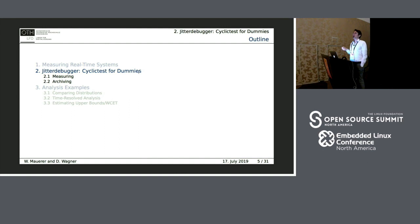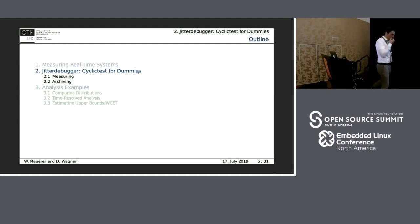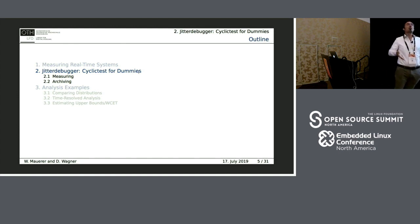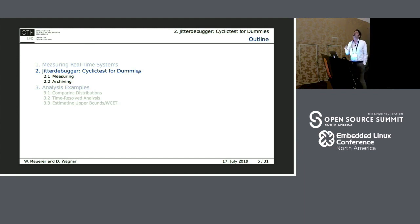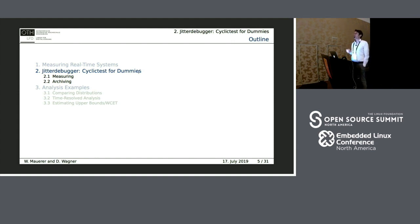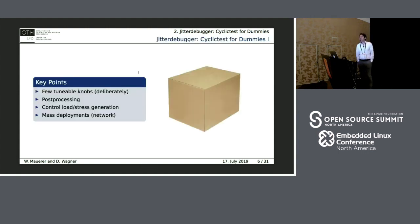Measuring maximum latencies of systems is quite simple — we've been doing that for ages with the venerable cyclic test tool. Basically, it sets up a timer, knows when the timer is supposed to expire, measures when the timer actually expires, compares the expected expiration time with the actual observed expiration time, and from the difference you can see how much overhead and uncertainty the system introduces to a given workload. So why would we want a new tool?